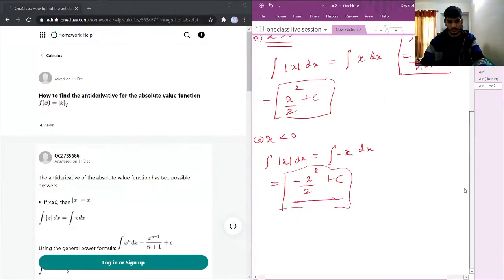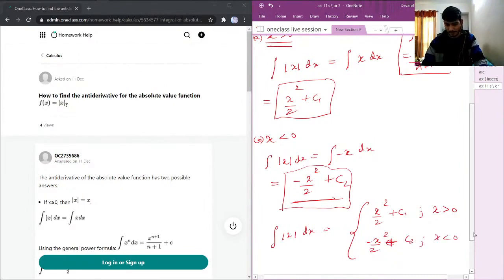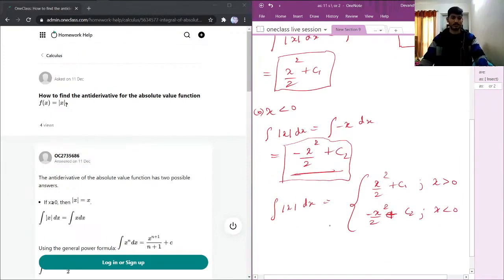So these are the two answers. Just for clarifying, we can write this as x²/2 plus c when x is greater than 0, and -x²/2 plus c when x is less than 0. Let's call this c₁ and this c₂, because these constants can be different.